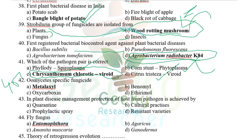Oomycete-specific fungicide is metalaxyl — trade names include Ridomil, Subdue, Apron. Oomycetes include Pythium, Phytophthora, Albugo, and downy mildews — metalaxyl is recommended for these. Metalaxyl was discovered in 1977. In plant disease management, protection of the host from the pathogen is achieved by prophylactic spray — spraying chemicals before appearance of disease.